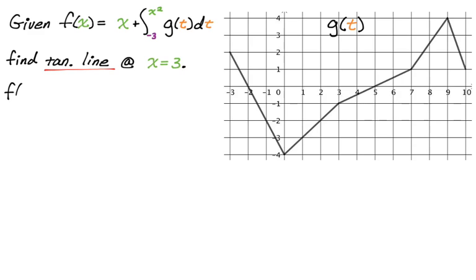So f(3) is going to be—first thing is, don't forget to substitute for x. So it's going to just be three plus the integral from negative three to, we're replacing every x we see with three, so three squared is nine. So it's actually the integral from negative three to nine of g(t)dt.